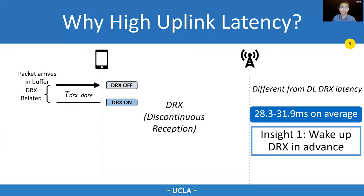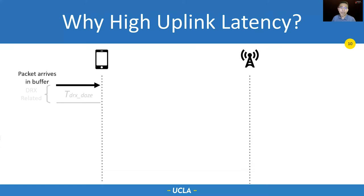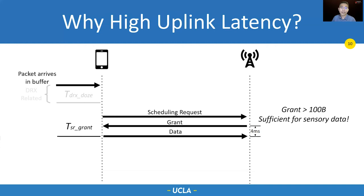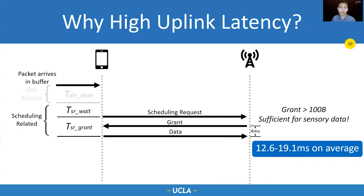The second latency element comes from scheduling. To send an uplink packet, a device first sends a scheduling request — an indicator that says 'I've got data to send.' The base station responds by returning a grant, which tells the device which resource blocks it can use to send uplink data four milliseconds later. This latency from the SR to data is denoted as TSR-grant. In addition, the device cannot send SR at any time; it has to wait for specific time slots, denoted as TSR-wait. We add both delays and call it scheduling latency, which is more than 12 milliseconds on average. If we can prefetch the grant resource, the data might not need to wait for this latency.